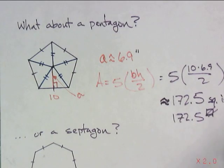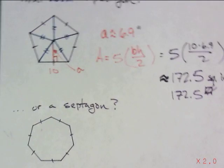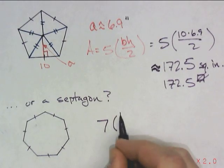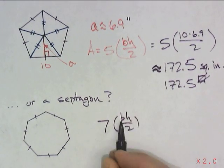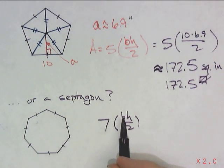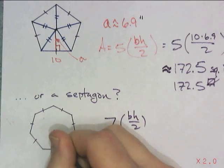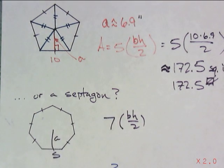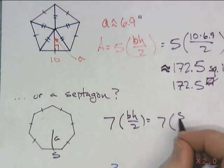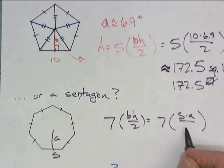So, for a septagon, it would be the same thing. Seven triangles, it would be seven times base times height divided by two. And once again, what is the base? Well, the base is nothing more than your side length. The height of your triangle is nothing more than your apothem.